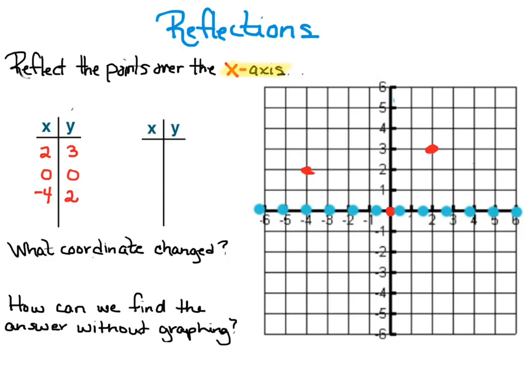So on that first point, when I choose it, it starts out again at two, three. When I reflect it, it's two, negative three. So the x value remained the same but the y value was the opposite. Again, zero, zero was on the folding line and so there's no change. And then in the third point, negative four, two becomes negative four, negative two.